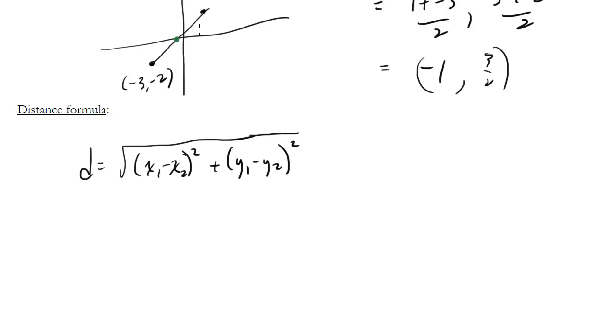So in this example, if I wanted to find the distance between these two, I would just plug in my points. So distance would be (1 minus negative 3) squared, and then (5 minus negative 2) squared.